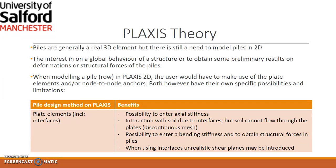Here is some basic theory in PLAXIS regarding piles. Piles are generally real 3D elements, but there is still a need to model piles in 2D within two-dimensional analysis — for interest in global structural behaviour or to obtain preliminary results on the formation of structural forces within the pile. Very realistically, piles are 3D elements; if you want more detail, you can do your model in 3D only. When modeling a pile or pile group — which could be a group of piles, not just one — in PLAXIS, the user will have to make use of available elements.